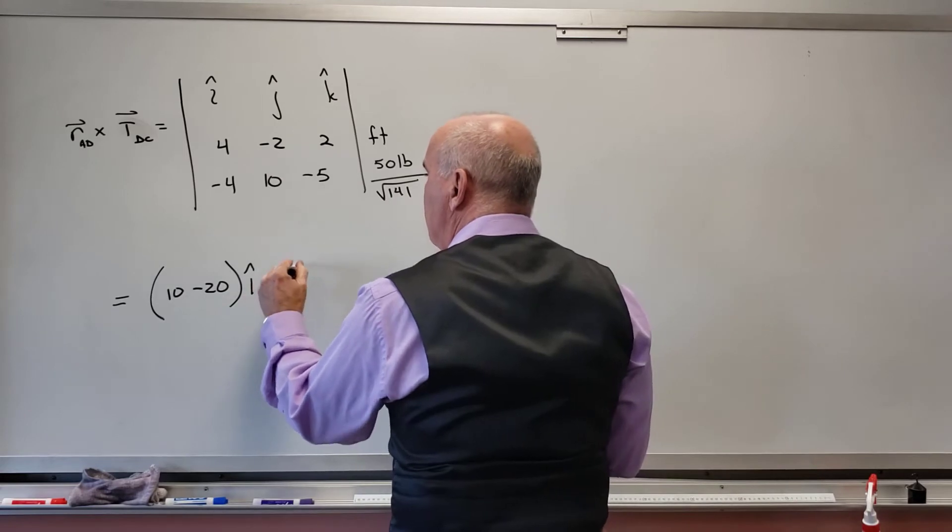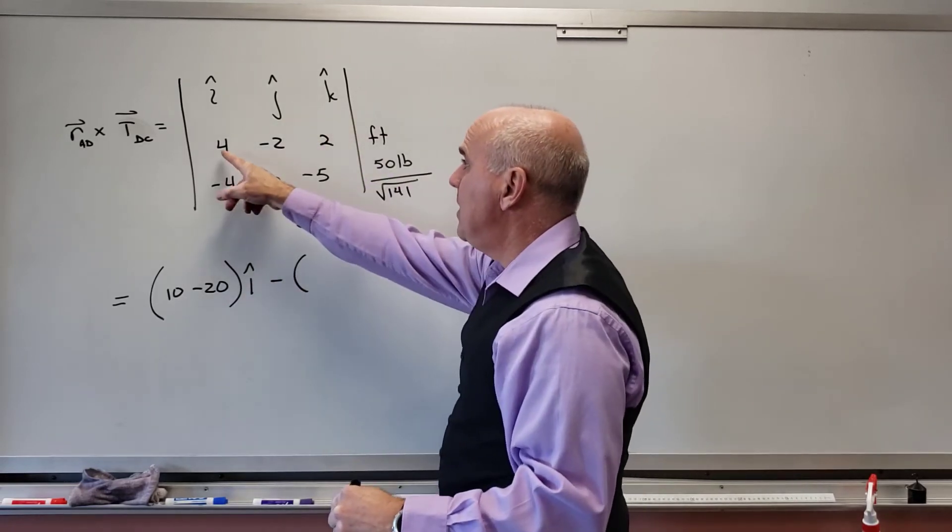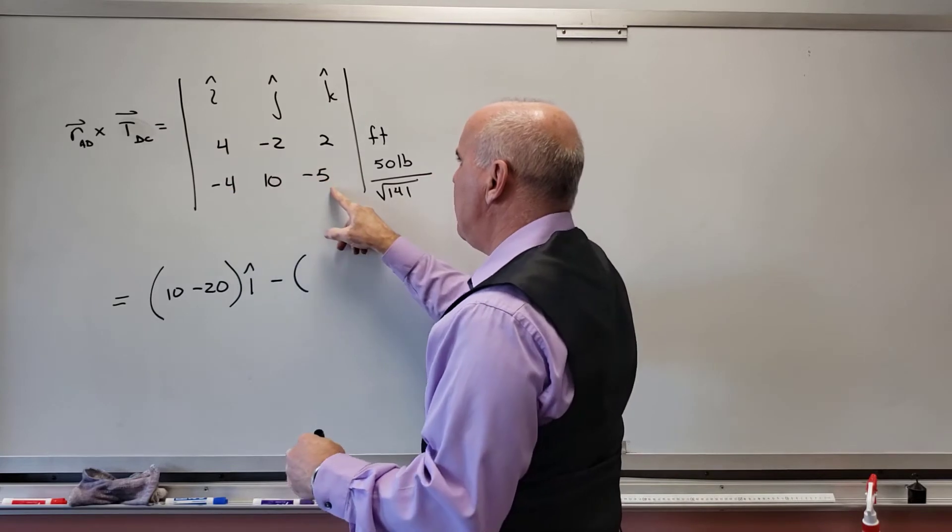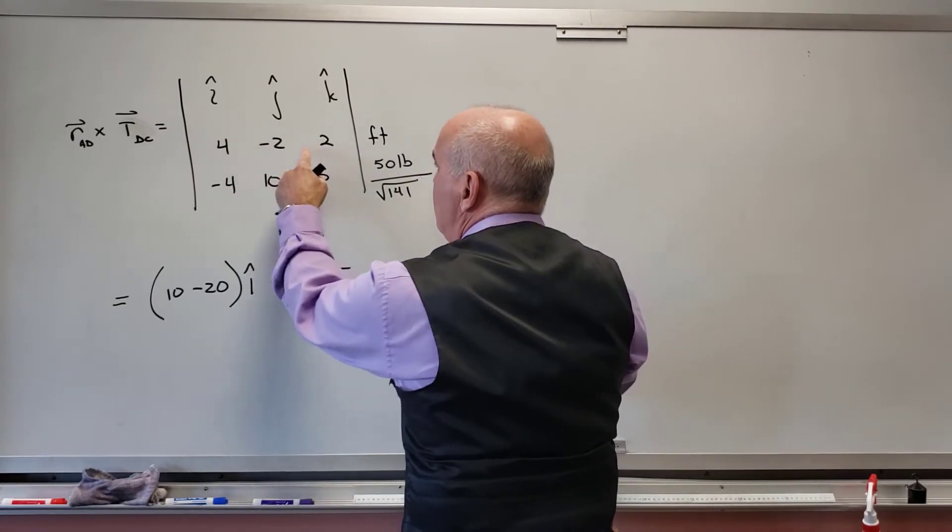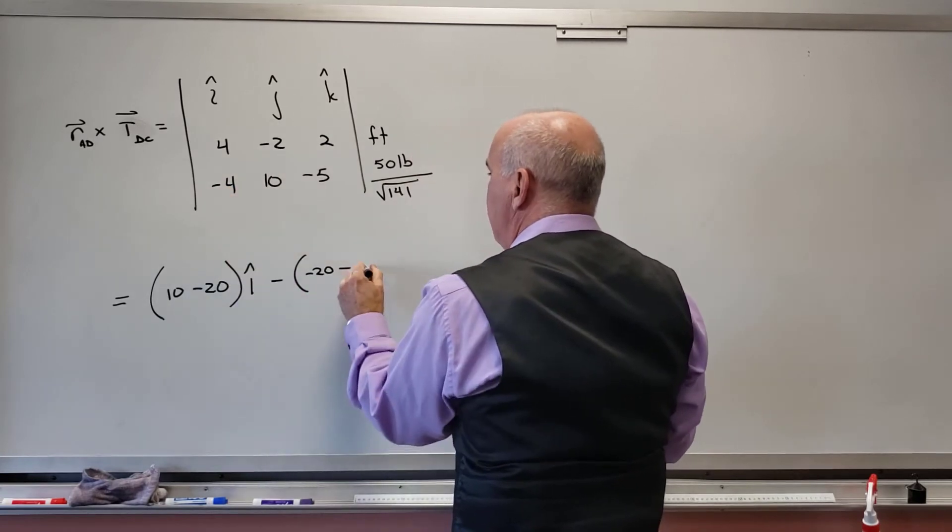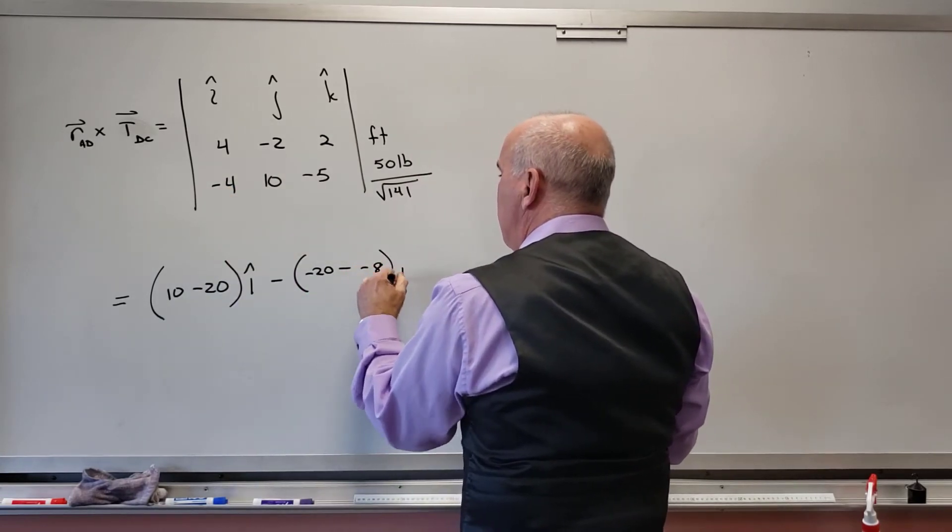And then minus, because j hat is negative, positive 4 times -5, that's -20, minus 2 times -4, which is -8. And that's my j hat.